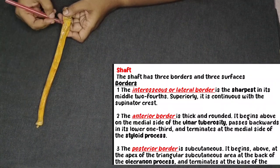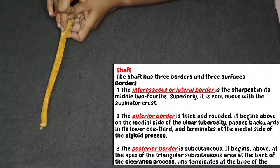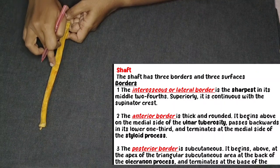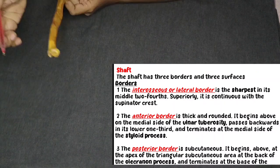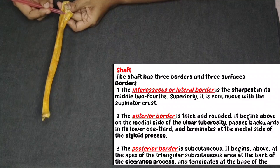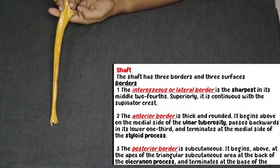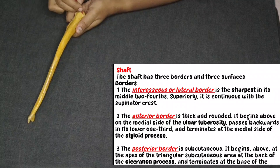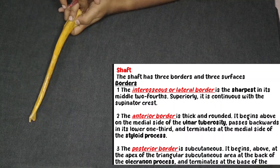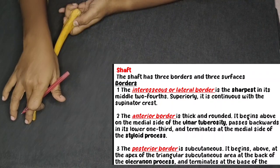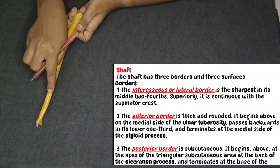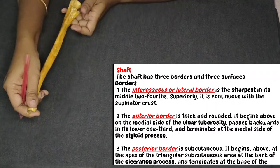Coming to the anterior border — it is thick and round, and it begins at the ulnar tuberosity above and ends at the styloid process below. Coming to the posterior border — it begins at the posterior surface of the olecranon process above and ends at the styloid process below. That is all about the three borders.